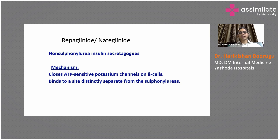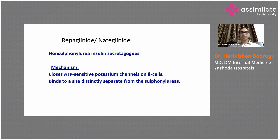Moving on to the next class: meglitinides. The two drugs available are repaglinide and nateglinide. They are insulin secretagogues, but non-sulfonylurea insulin secretagogues. They act at the beta cell level and stimulate insulin secretion, binding to a site separate from that of sulfonylureas.